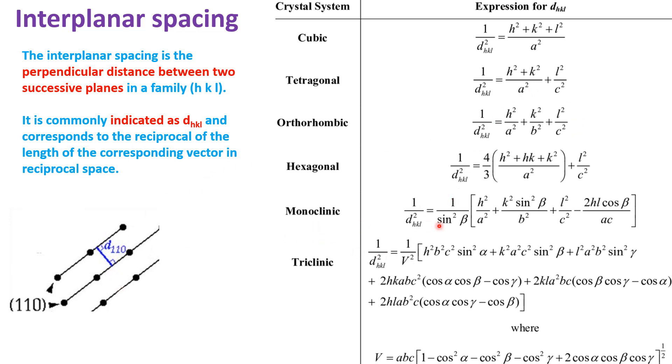In the case of monoclinic and triclinic systems, it also depends on the angles alpha, beta, gamma. So HKL are the Miller indices, a, b, c, and alpha, beta, gamma are the lattice parameters. Using these values, we can find out the interplanar spacing in the case of crystals.